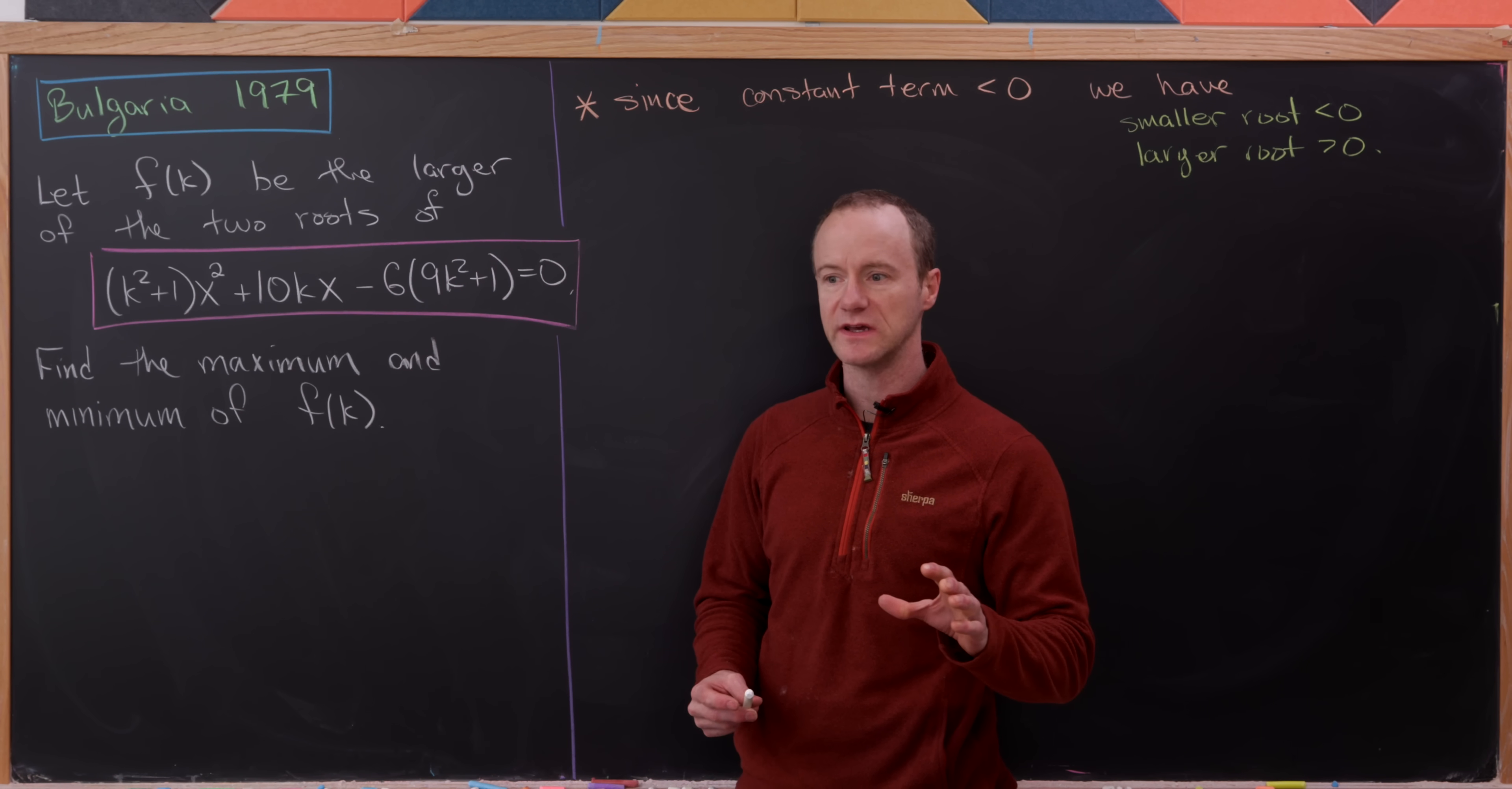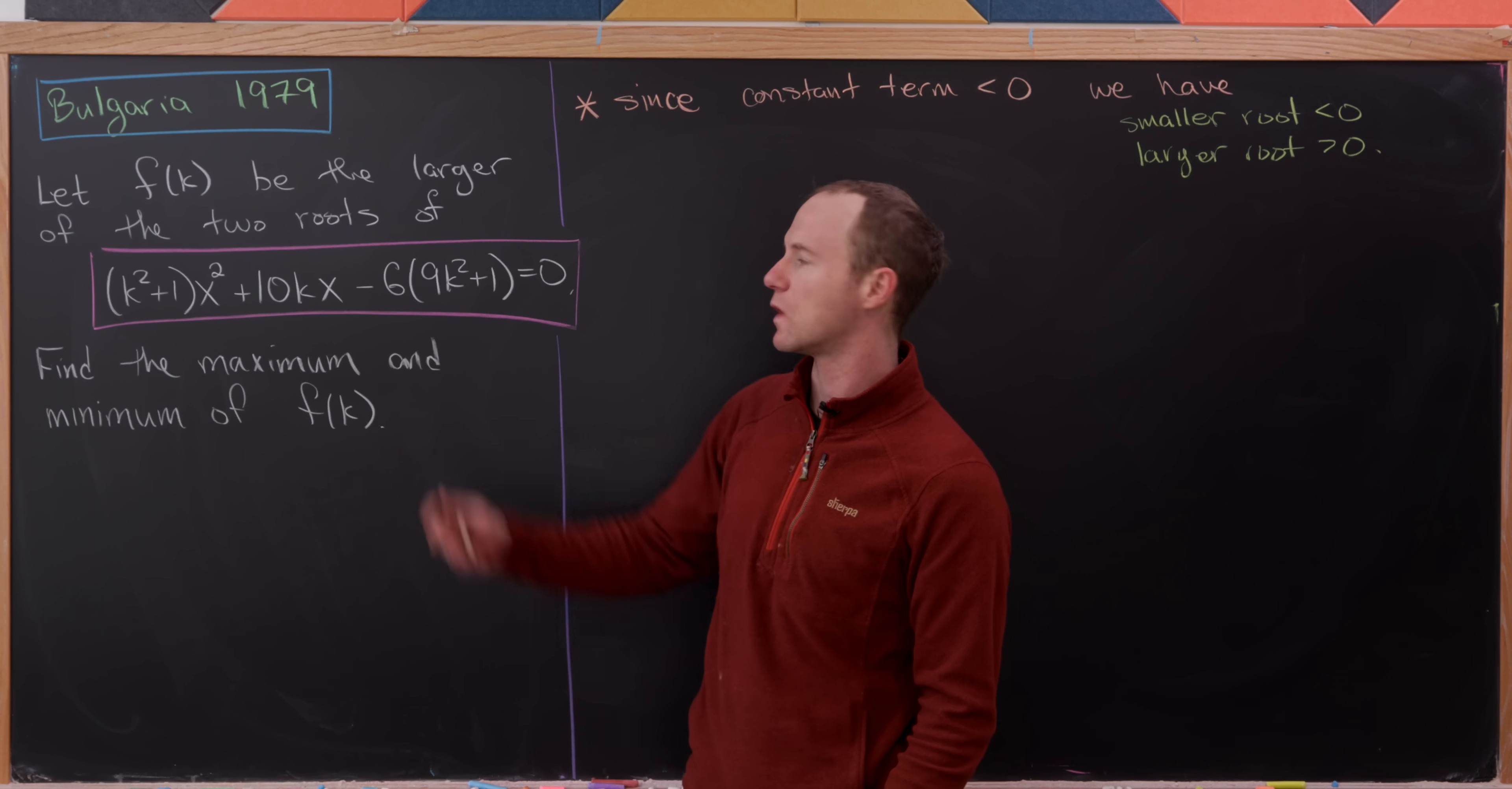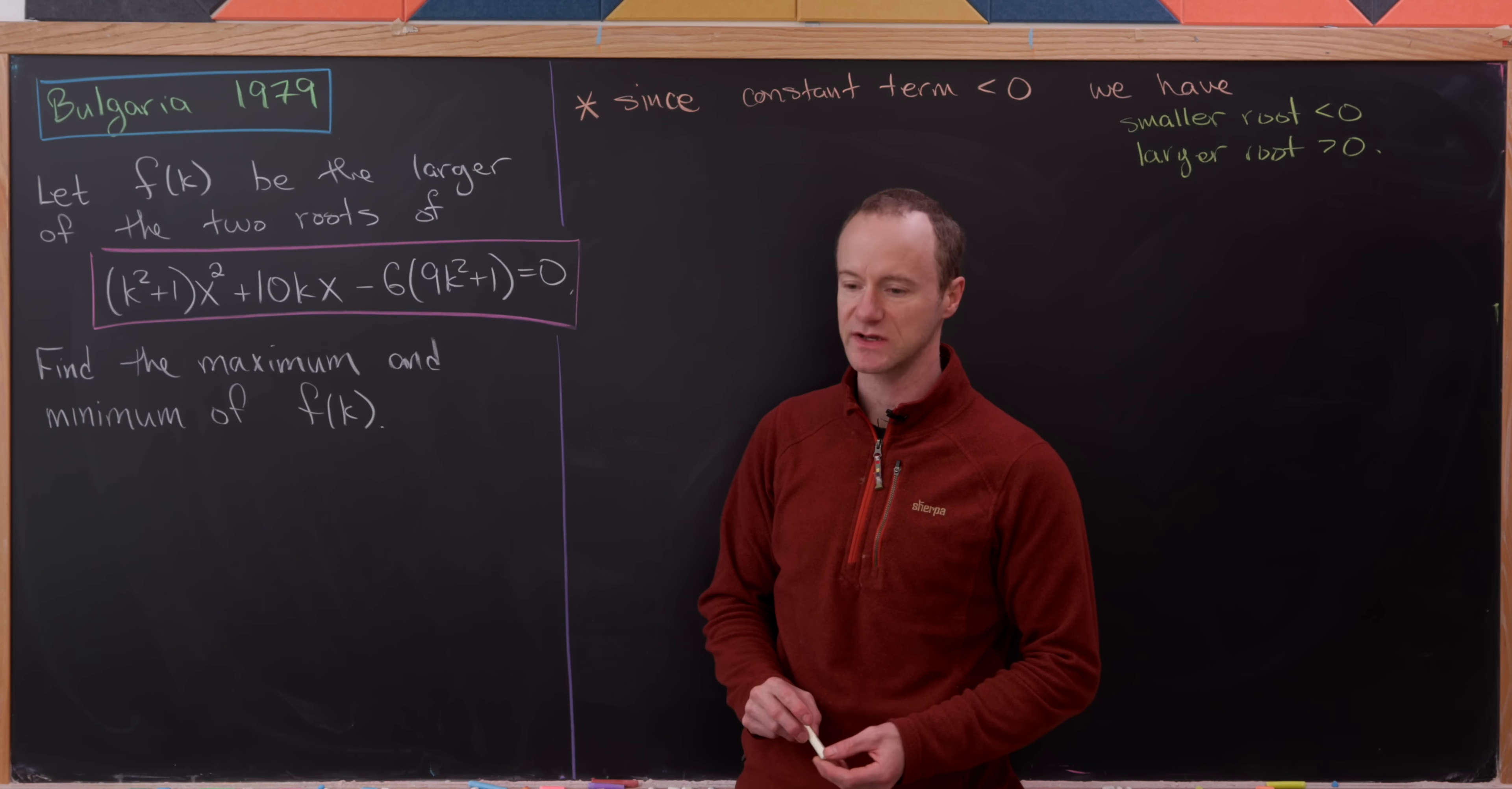Our goal is to find the minimum value and the maximum value of f(k). Let's look at our quadratic polynomial here: (k² + 1)x² + 10kx - 6(9k² + 1).